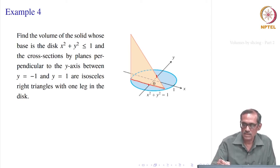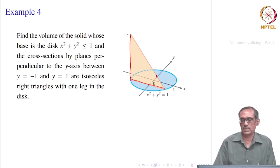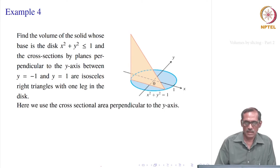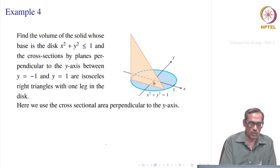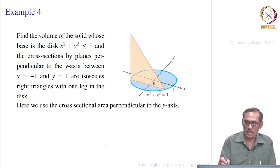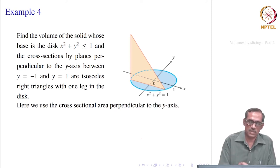This leg is equal to this leg — the sides of these two become the same — with one leg in the disc. So we are really using the cross sectional area perpendicular to the y-axis instead of the x-axis here. Our integrals will correspond with respect to y, and this cross sectional area has to be written as a function of y.